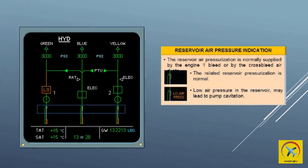Reservoir low air pressure indication: the reservoir air pressurization is normally supplied by the engine 1 bleed or by the cross bleed air. No indication if the related reservoir pressurization is normal. Appears amber if the respective reservoir air pressure is low.